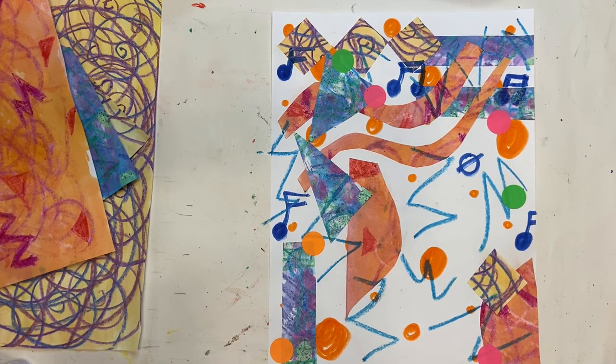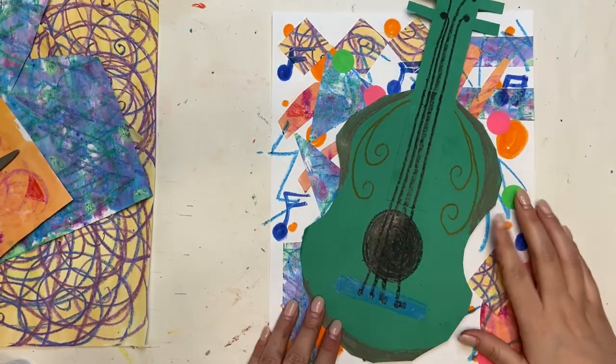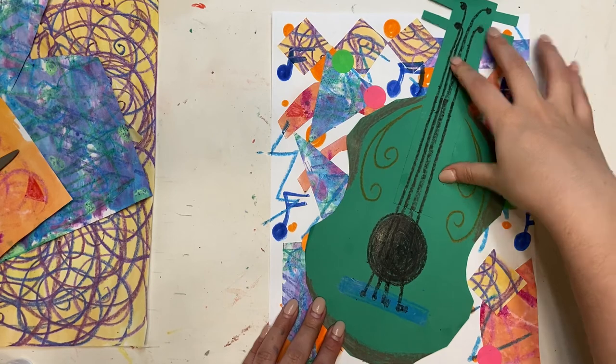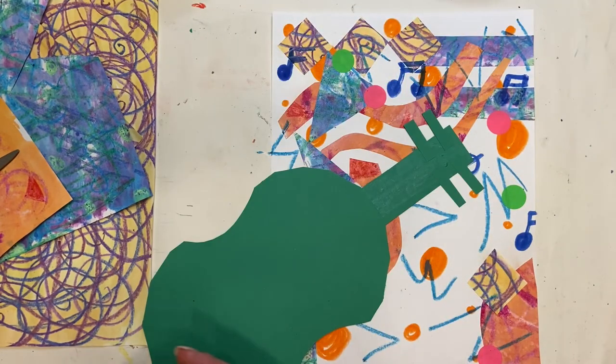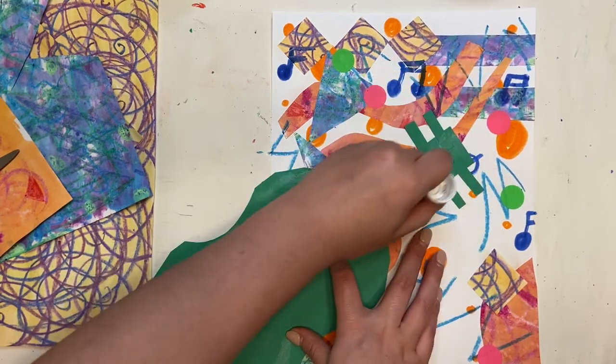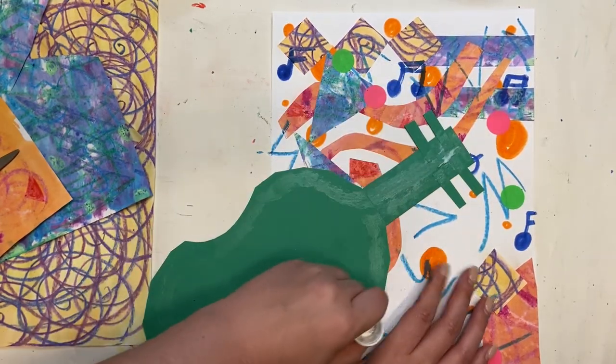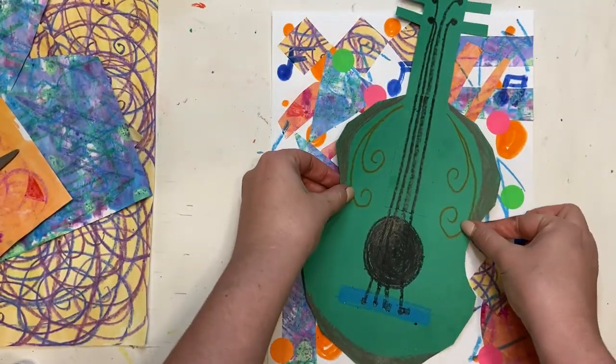When your background is done, add your guitar right on top. Once you've glued it down by going around the edge, you can finish it with either some more stickers or any other designs where you think that you need more detail. I cannot wait to see your guys's guitar collages!